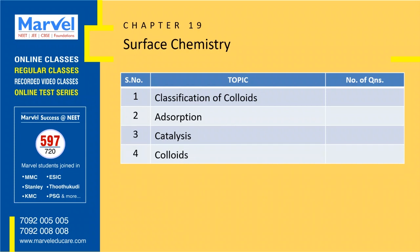Next chapter: Surface Chemistry — a less important chapter with only 10 questions. Expect either 0 or 1 question. The first 2 topics have 7 questions, and the next 2 topics have 3 questions. If you revise the first two topics, you will get a question from Surface Chemistry. This gives 4 marks — relatively easy.